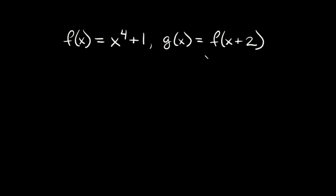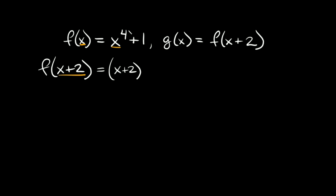So here we just want to write a new function for g of x, and the way that we're going to set it up is by setting it up with f of x plus two. So instead of just x in the parentheses — where we plugged in x into our function — here we have x plus two, and that's what we're going to plug in. So this is going to be equal to x plus two to the fourth power plus one.